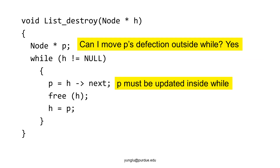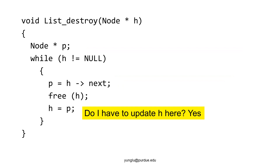Another common question is whether we can move the definition of p outside the while loop. The answer is yes — you can declare node asterisk p outside while. However, it is important to note that p's value must be updated inside while, since p is the node after h. Another question is whether h needs to be updated inside while. The answer is yes: after freeing h, we need to update h for the next iteration.